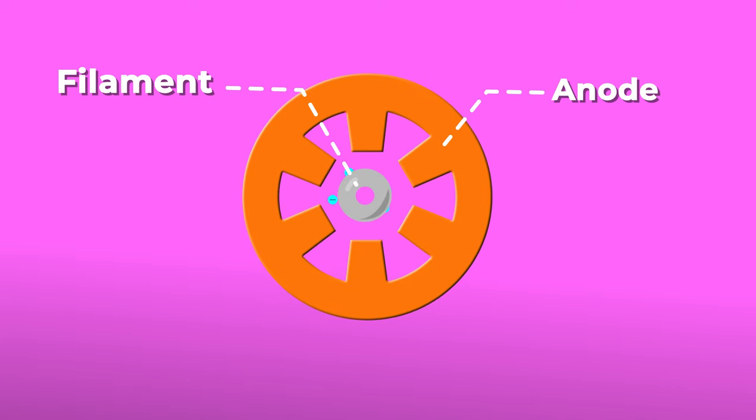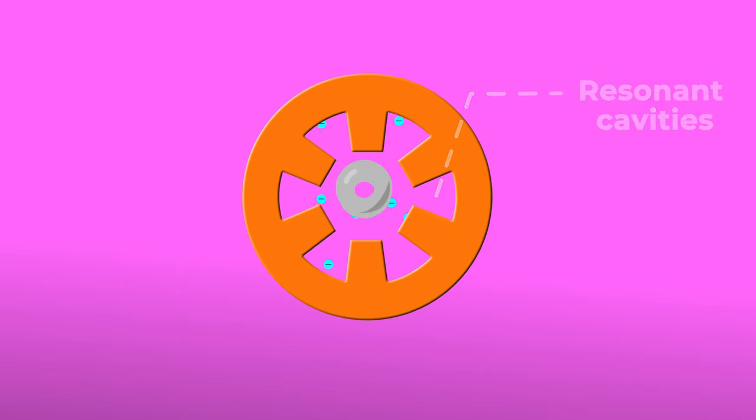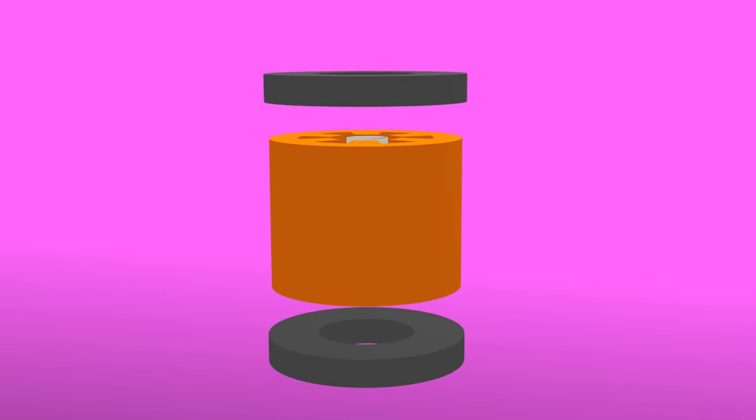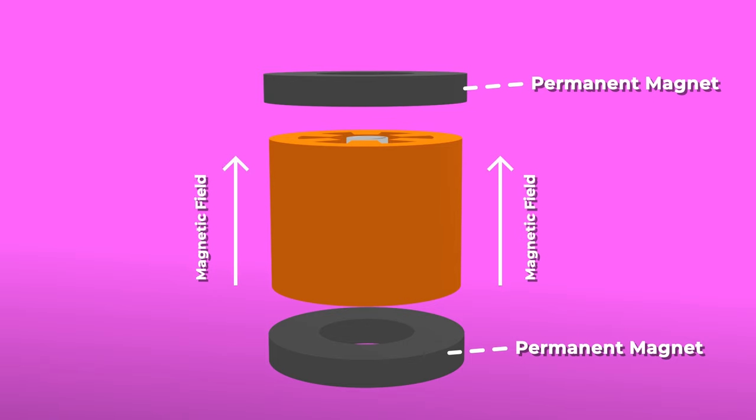A ring-shaped anode surrounds the filament. Electrons are emitted as the filament heats up and rush towards the anode or the positive terminal. The anode has slots cut into it, called resonant cavities. Two ring magnets are placed above and below the anode, which generates a magnetic field parallel to the cathode.